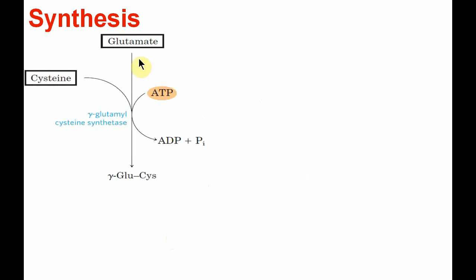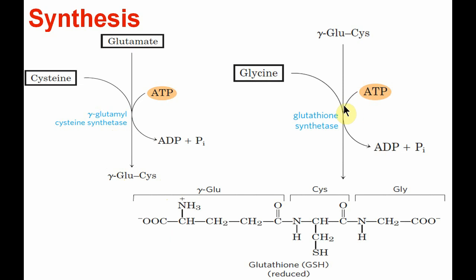So first we see the synthesis of glutathione. Glutamate is activated with the help of ATP and then it combines with the amino group of cysteine with the help of synthetase enzyme to form gamma-glutamyl-cysteine. Then this gamma-glutamyl-cysteine is further activated with the help of ATP and combined with the third amino acid, glycine, with the help of synthetase enzyme, resulting in formation of gamma-glutamyl-cysteinyl-glycine, that is glutathione. Here you can see the sulfhydryl group. When it is synthesized it is called reduced glutathione. The important reason is that usually in peptide bond formation the carboxyl group of the alpha carbon takes part, but here in glutathione the gamma-carboxyl group takes part into the peptide bond formation, and that's why glutathione is called a pseudopeptide.